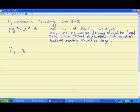So the claim that we're testing is that more than 80% of adults believe texting should be illegal. So what we're testing is P greater than 80%. That's the original claim that we're testing.